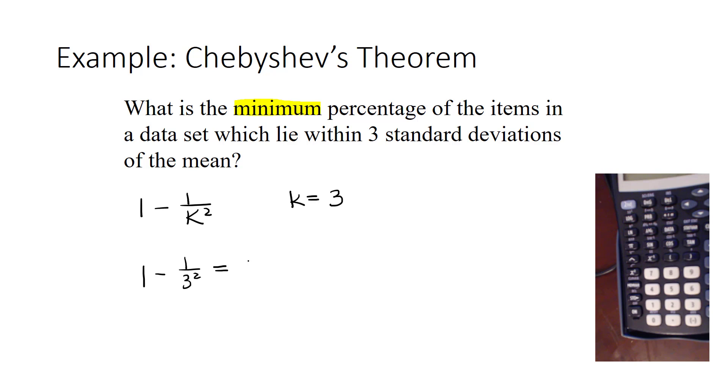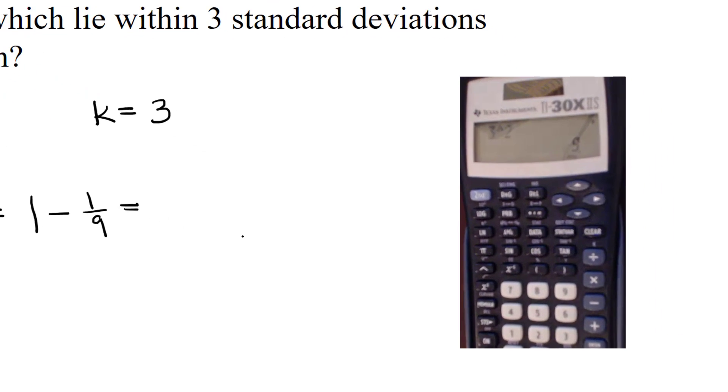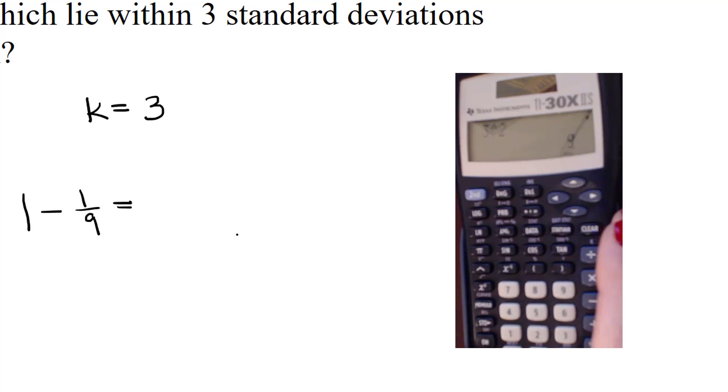Now, 3 squared means 3 times 3, so that's 1 minus 1 over 9. Or, on your calculator, 3 to the second power equals 9. Subtracting fractions requires a common denominator. If you are not comfortable with that, you can actually use your TI-30X2S calculator and many other types, but this is the one that I have my students use.